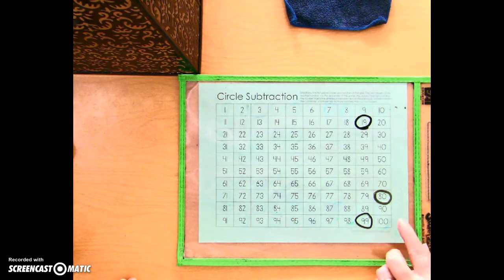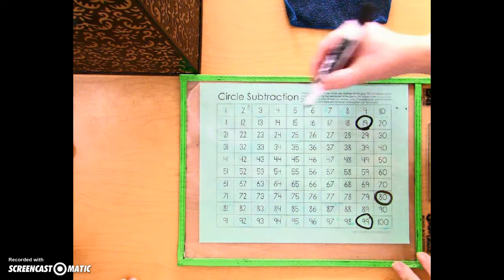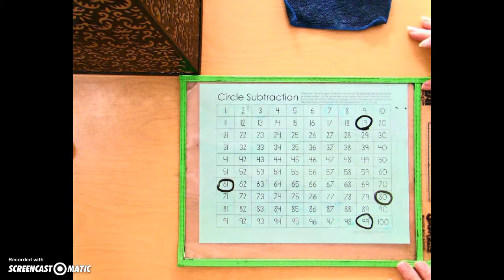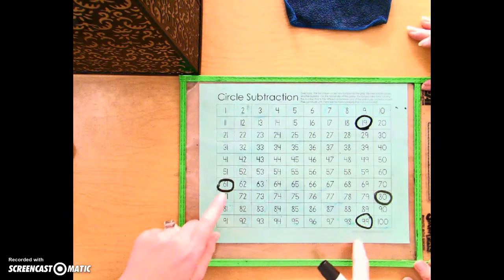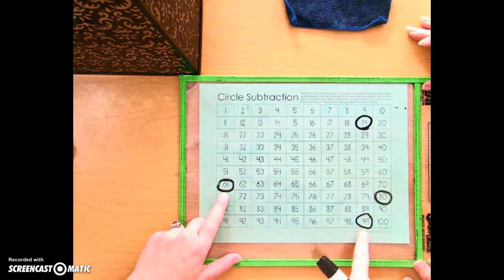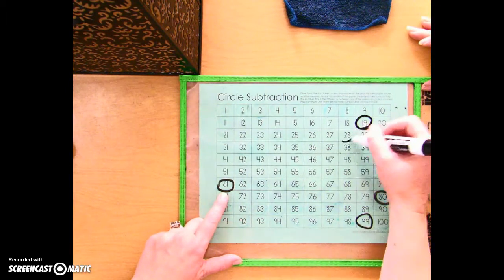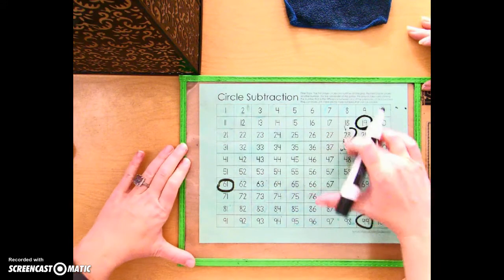Okay, and then I can subtract any two numbers on the board. So I'm going to do 99 minus 61 is... 38.